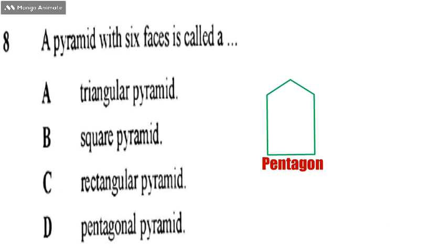Whenever they ask you the name of the pyramid and they give you the number, all you need to do is just subtract 1 from that and then find the number of sides that are remaining. If it's 5, that means the polygon with 5 sides is a pentagon, then the pyramid will be a pentagonal pyramid.